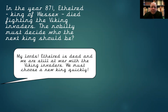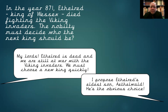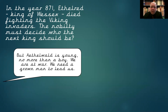My lords, Æthelred is dead and we are still at war with the Viking invaders. We must choose a new king quickly. I propose Æthelred's eldest son, Æthelward — he's the obvious choice. But Æthelward is young, no more than a boy. We're at war. We need a grown man to lead us.